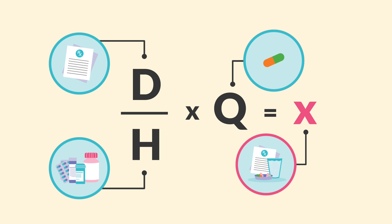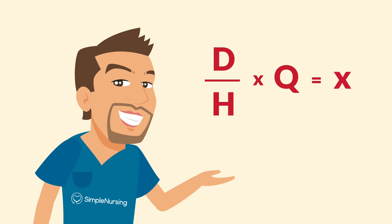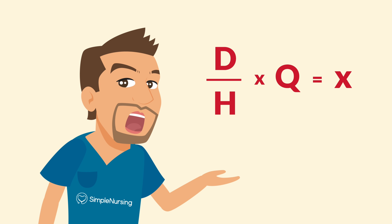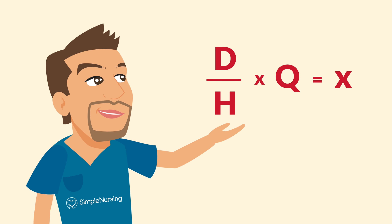Just remember: D over H — like drinks around the house — times the quantity. Let's see if we can identify all the components required in this formula.